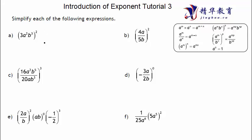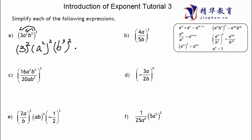Let's see — we're trying to simplify this first one. We have a 3-term expression with a square on the outside, so we apply it to each term. We get 3 to the power of 2, then a squared to the power of 2, then b cubed to the power of 2. So 3 squared equals 9; a squared to the power of 2 uses power-of-power, which means multiply the exponents; and b cubed to the power of 2 gives b to the power of 6. Simplified — done.